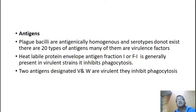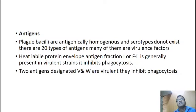Coming to antigens: plague bacilli are antigenically homogeneous and serotypes do not exist. There are 20 types of antigens, many of them are virulence factors. The heat-labile protein envelope antigen — Fraction 1 or F1 — is generally present in virulent strains. It inhibits phagocytosis. This F1 antigen will help in serological diagnosis; antibodies to this antigen are significant for diagnostic purposes.